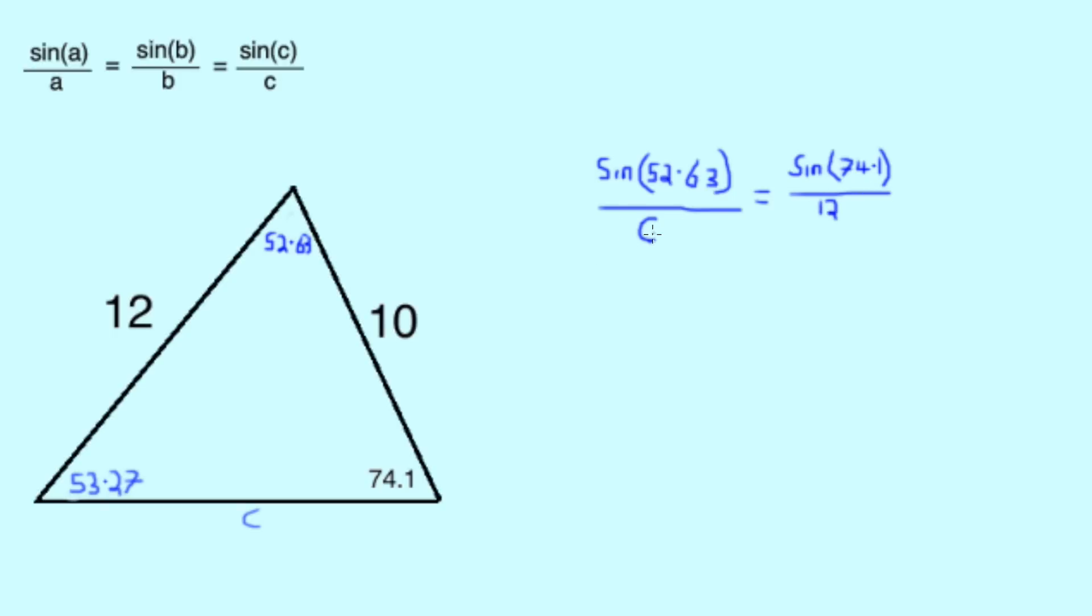What we want to do next is get rid of our C on our left-hand equation, just leaving our sine 52.63. Now, to do this, we can times the entire equation by C, but we need to remember that what we do to one side of an equation, we must do to the other. So, our new equation is sine 52.63 equals sine 74.1 over 12 times C.